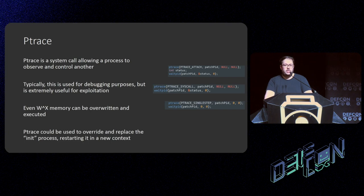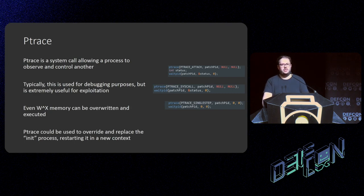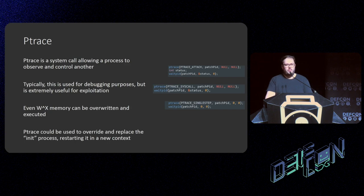Luckily there was ptrace — a system call allowing one process to observe and control another for debugging purposes. This is typically for things like logging, tracking, and debugging running on the OS, like the `strace` command in Linux. It can even modify memory that is write-denied in standard processes, meaning you can modify running code even if you're not meant to be able to in the particular ELF you're working with.